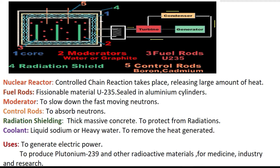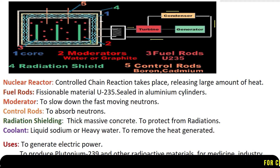Now let us look at the parts of a nuclear reactor. The nuclear reactor mainly consists of moderators. These moderators are made up of water or graphite, and they are used to slow down the fast-moving neutrons. The next part is fuel rods. These fuel rods are made up of fissionable materials like uranium-235 and are sealed in aluminum cylinders. The moderator and fuel rods are placed together in the core.